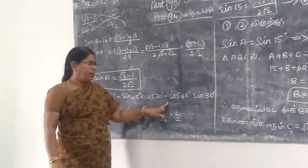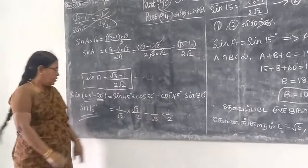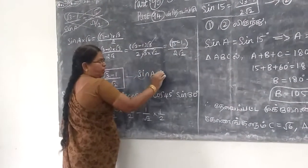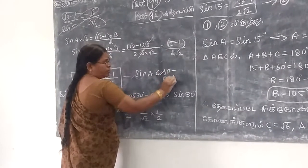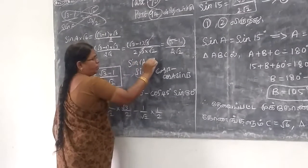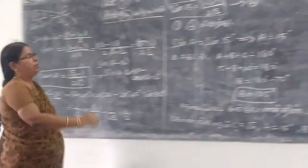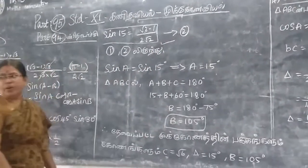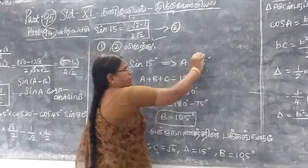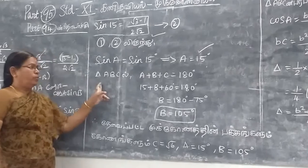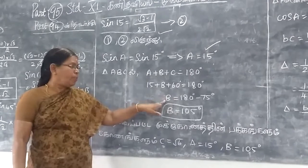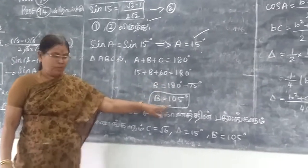Sin A cos B minus cos A sin B — this is sin(A minus B). So we have to find the value of sin(A minus B), so sin A cos B minus sin B.